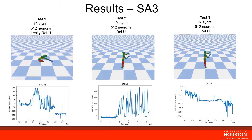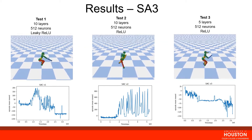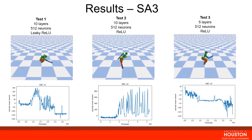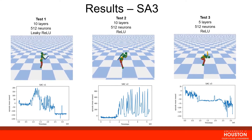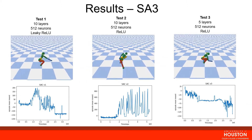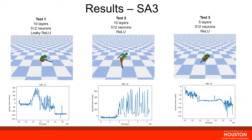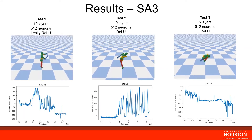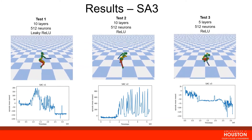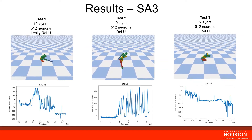Here we show the results of the three SAC tests. For all three tests the agent was unsuccessful in learning to walk forward. For test one and test three, the robot agent starts jumping in place, which is reflected in the plots of episode mean reward over time steps. For test one, at around 2.5 million time steps the mean reward drops and plateaus, which is where the jumping begins. For test three, this behavior occurs at around 1 million time steps.